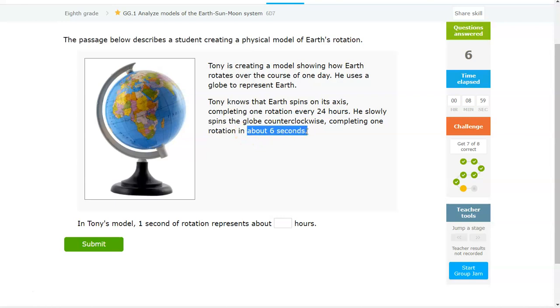So for Tony in this model, 6 seconds is equal to about 24 hours because he did a complete rotation in 6 seconds. So the question that was asking, you've got to convert that to just one second. One second rotation represents how many hours. So you've got to do a little bit of math there.